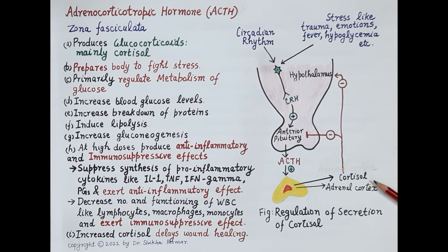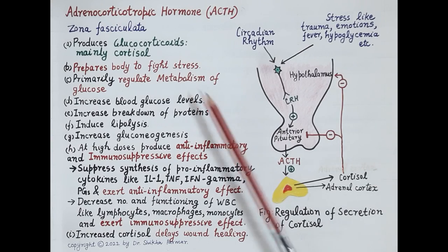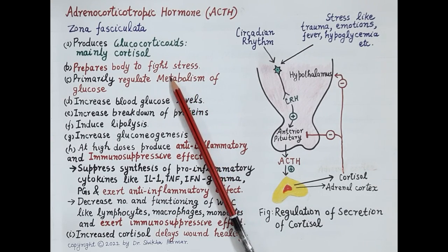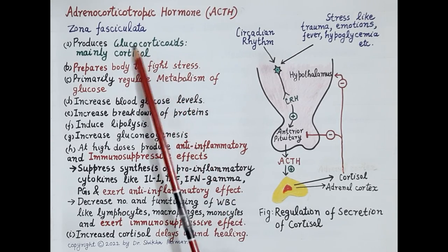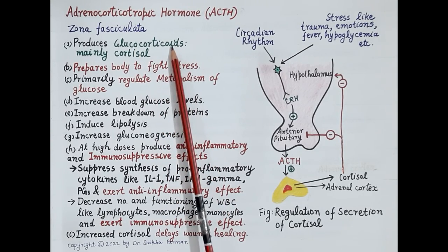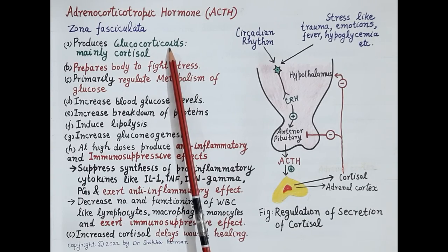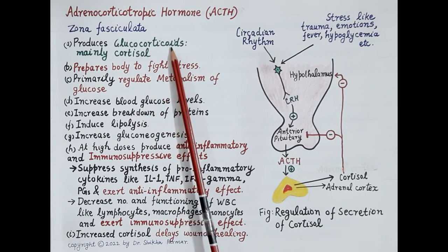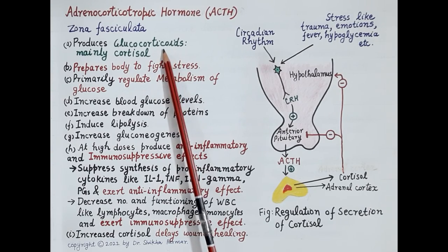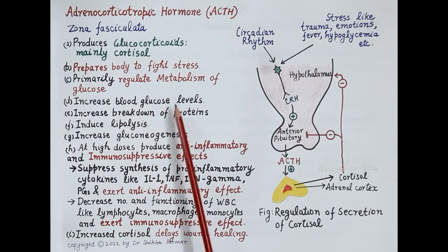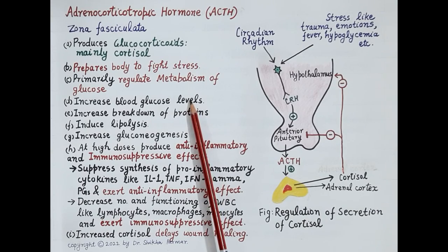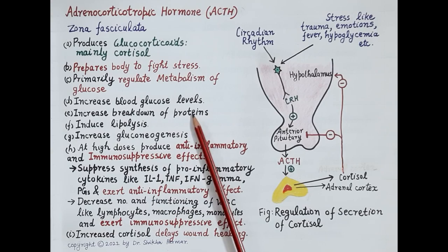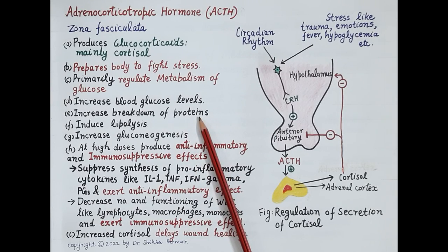Cortisol prepares the body to fight with the stress. During stress, the glucose requirement of body cells increases. Glucocorticoids, as the name suggests, are the cortical hormones produced by the adrenal cortex that primarily regulate metabolism of glucose. These hormones increase blood glucose levels. Glucocorticoids induce increased breakdown of proteins — proteins are broken down to amino acids, which act as a new source.